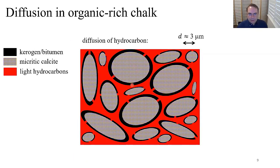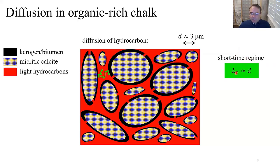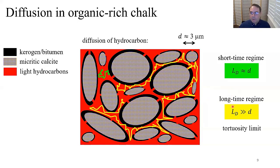In the organic-rich chalk, the micritic calcite contains water, with grains coated by kerogen and bitumen, and light hydrocarbons we want to produce — note the length scale of around three microns. In the short-time regime where L_d is of the order of the pore size, the random walk hits grains or kerogen and is restricted, giving information about pore size. In the long-time regime, the molecular diffusion goes through all pores and witnesses all the tortuosity of the porous medium, from which we extract tortuosity.